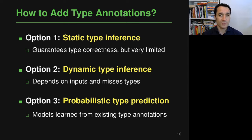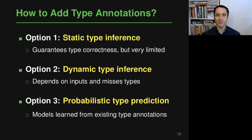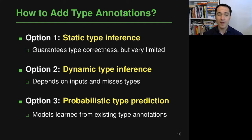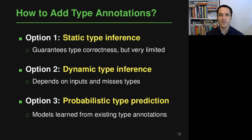I want to look at the second problem neural software analysis has been applied to: how to automatically add type annotations to code bases that currently don't have them. There are different options. Option one is static type inference — an algorithm that guarantees the types it adds are correct, but in practice static type inference is relatively limited, particularly for languages like Python or JavaScript that are hard to analyze statically. Option two is dynamic type inference — run the code, observe types at runtime, then add them as annotations — but this requires inputs to run the code, and observed types may not capture the full intended type.